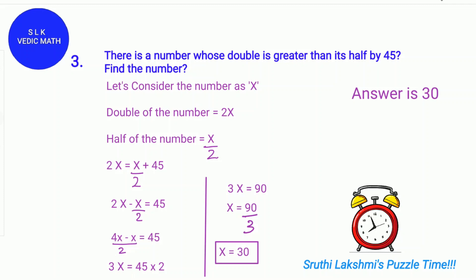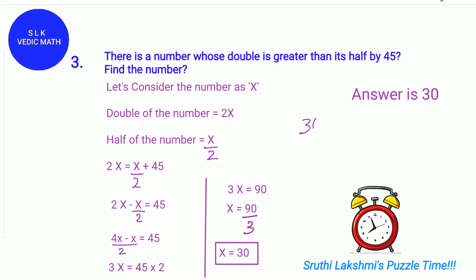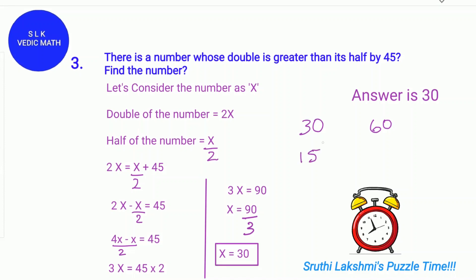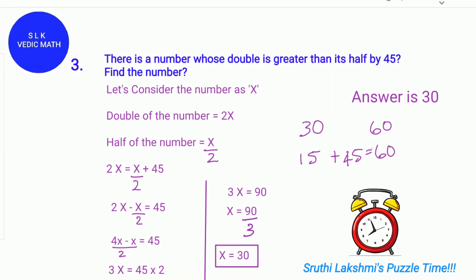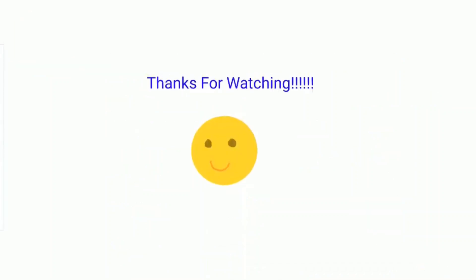To verify our answer: the answer is 30. The double of 30 is 60 and the half of 30 is 15. We add 45 to 15: 15 plus 45 is 60. So our answer is confirmed as 30. Thanks for watching!